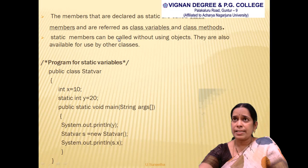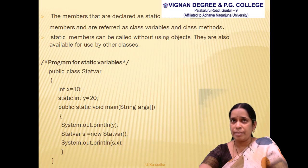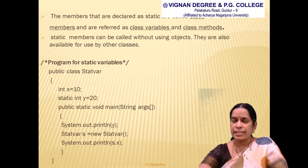Static variables and static methods are also called class variables and class methods. They belong to the class, not to any object, and do not reside in any object. Therefore, we do not need an object to invoke them. In the example, class 'StatVar' has a variable 'x' holding value 10 — this is an instance variable, so a copy exists in each object.